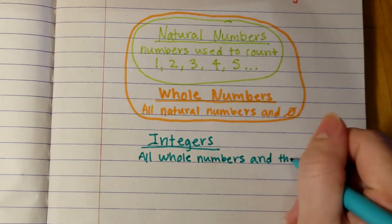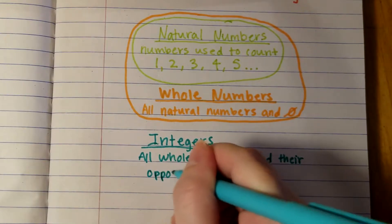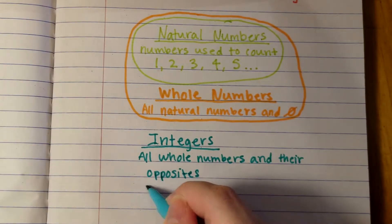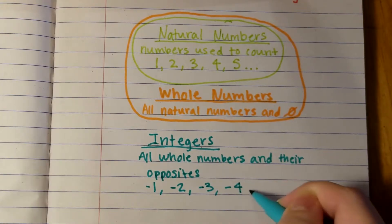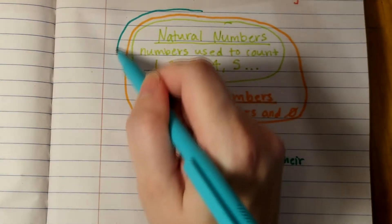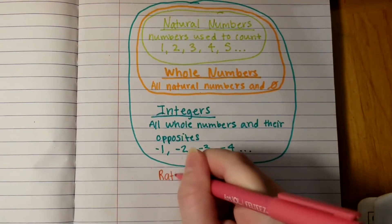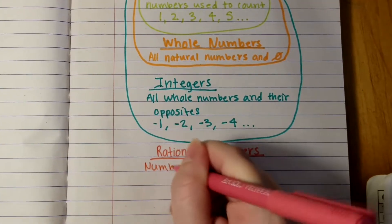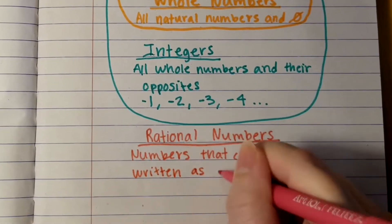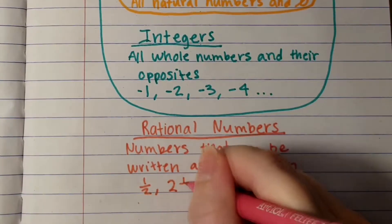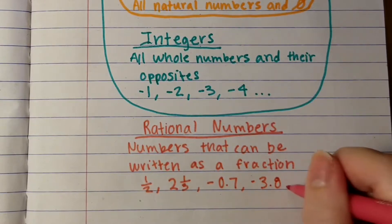This will be explored in the next video. To continue with our notes, we are going to draw another circle around the whole numbers, because whole numbers are integers, but we have to include their opposites too. And this brings us to the last classification of the day: rational numbers. Rational numbers are all natural numbers, whole numbers, integers, and positive and negative fractions and decimals. If it can be written as a fraction, then it is a rational number.